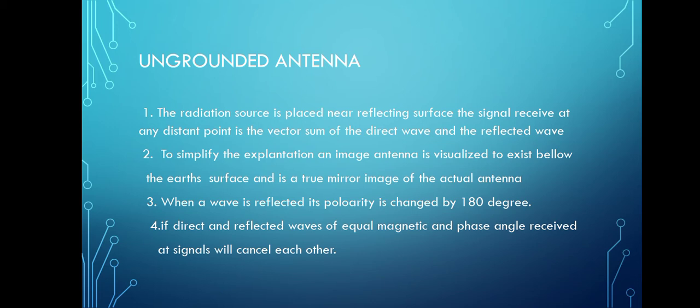To simplify the explanation, an image antenna is visualized to exist below the earth's surface and is a true mirror image of the actual antenna. The direct ray is reflected on the earth's surface. When a wave is reflected, its polarity is changed by 180 degrees. If the direct and reflected waves of equal magnitude and phase angle are received at exactly the same time, the two signals will cancel each other.